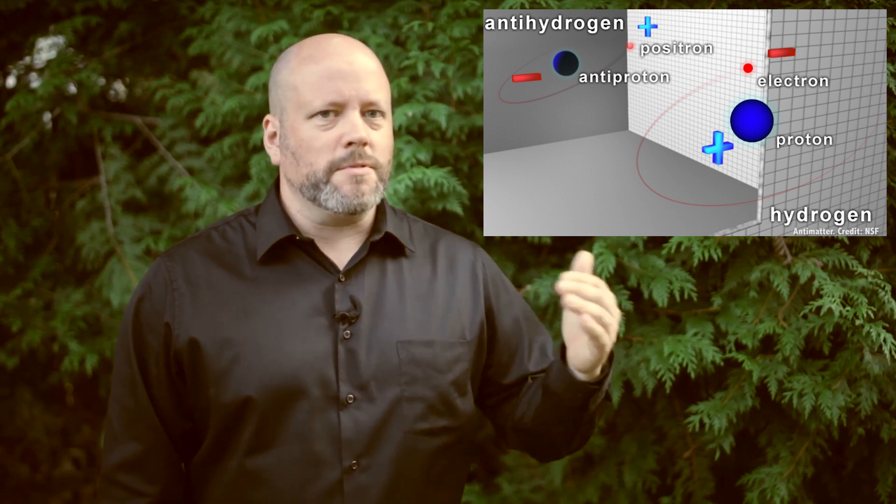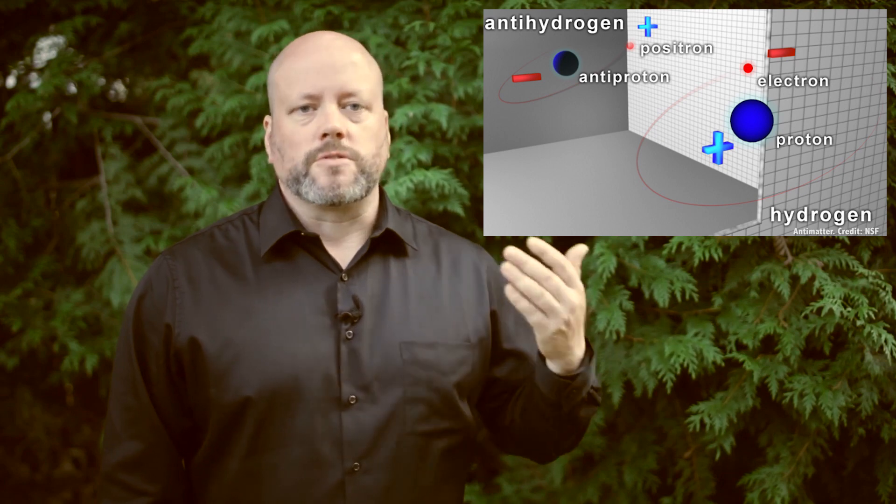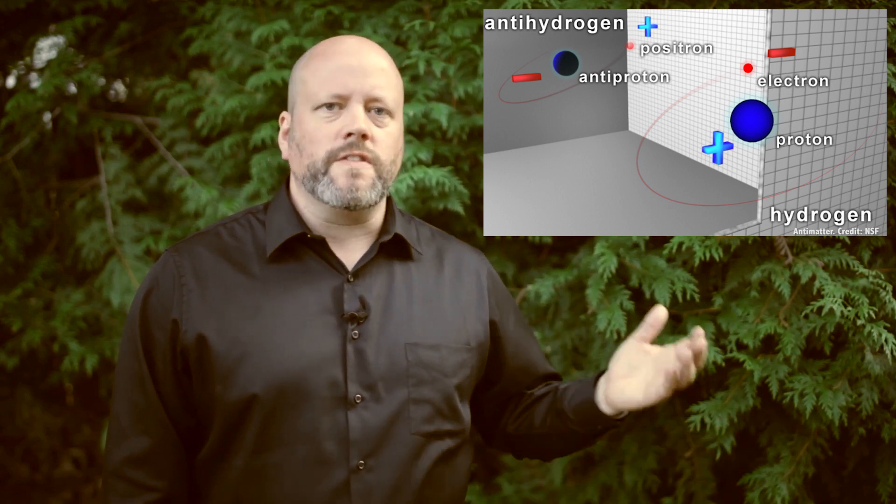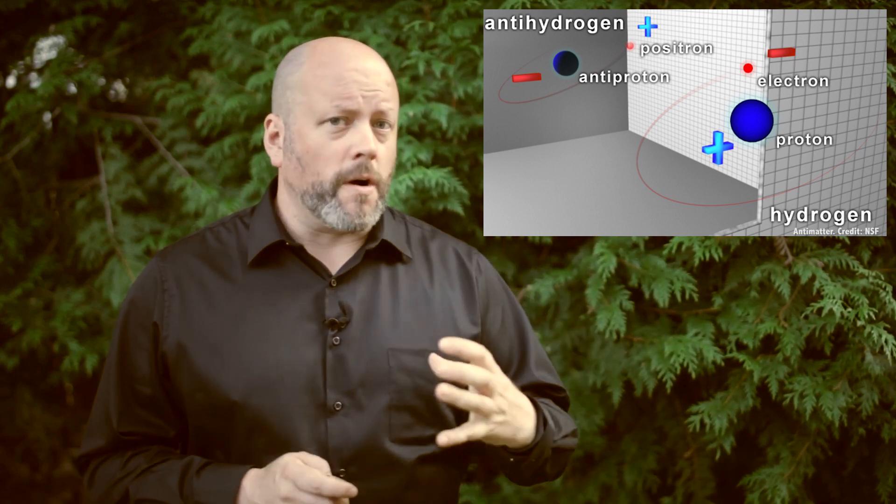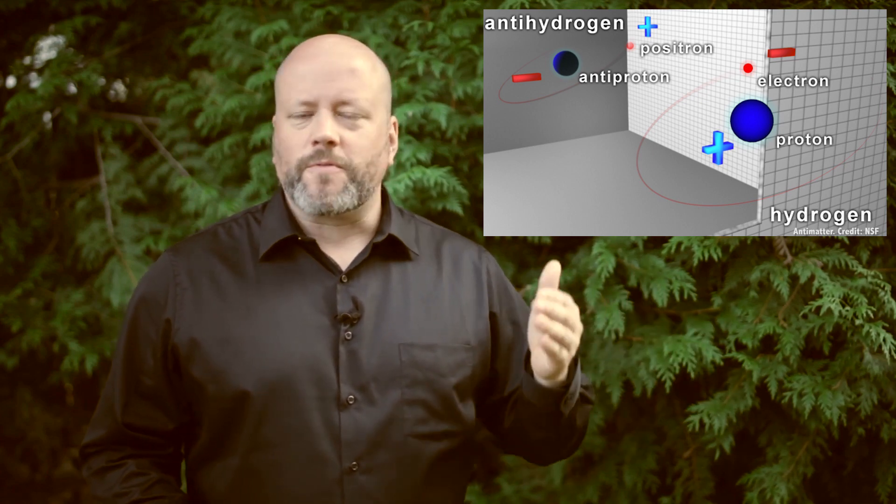Antimatter is exactly the same as regular matter, except everything is backwards. Electrical charges, spin directions, and the configuration of all the subparticles that make it up. It's all backwards. Everything is opposite, except for mass.